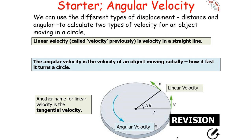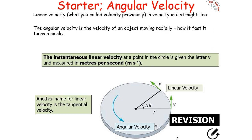We've learned previously that there are two types of velocity. There's linear velocity — the velocity in a straight line, which is displacement in a straight line with respect to time. Whilst angular velocity is the velocity of an object moving radially — how quickly an object rotates in a circle. Another name for linear velocity is tangential velocity.